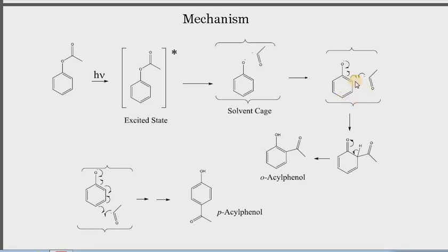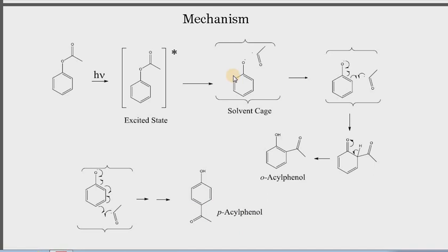Preference is given to the ortho position. First it will attack at the ortho position, and after the shifting of this hydrogen atom, it acquires aromatic character and we get ortho-acylphenol. In the same way, para-acylphenol is also formed. In the gas phase, this solvent cage effect is not possible.